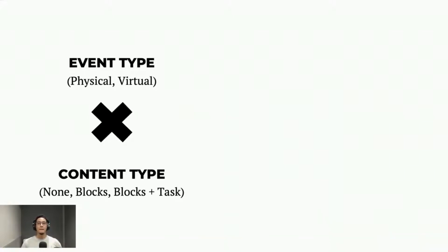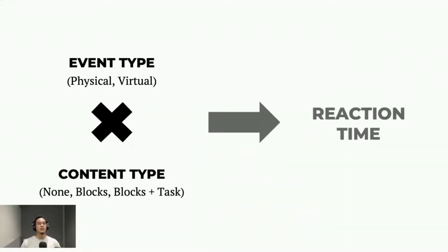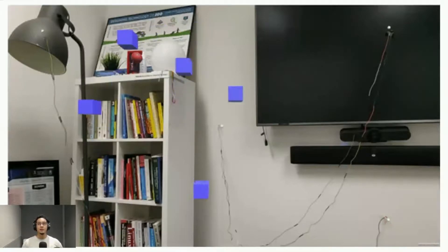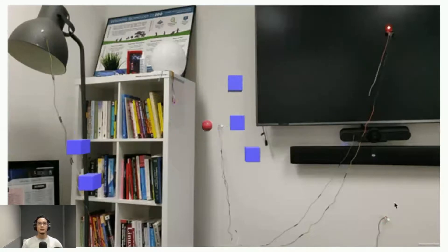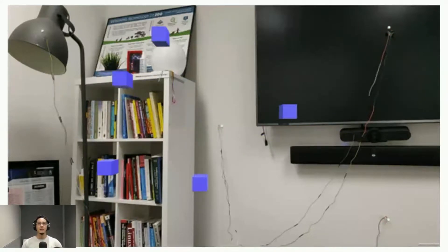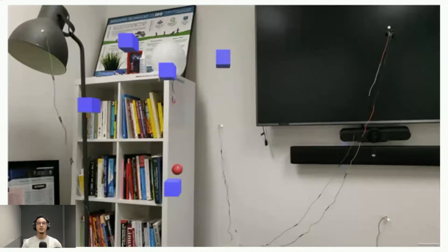Content type could either be none, blocks, or blocks plus task. In the none condition, no virtual content would be rendered. In both blocks and blocks plus task conditions, five blue cubes passing around a red sphere would be rendered, as seen in the next slide. In the blocks condition, participants were not instructed to perform any tasks with the virtual content. While in the blocks plus task condition, participants were given the additional task of counting the number of times the red sphere was passed amongst the blue blocks.